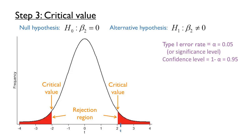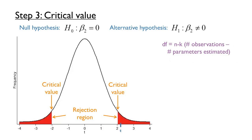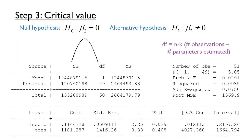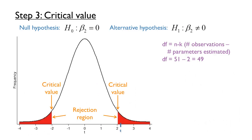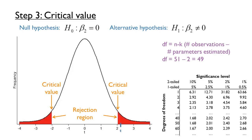Like many other distributions, the shape of a t-distribution depends on the degrees of freedom. In this case, the degrees of freedom in the regression, sometimes abbreviated df, is n minus k — the number of observations minus the number of parameters estimated. Looking back at the regression results, we have 51 data points and two parameters estimated, the constant and the slope, giving us 49 degrees of freedom. After we have selected the type 1 error rate and we know the degrees of freedom, we can find the critical value from a table. For our two-tailed test with a 5% significance level and 49 degrees of freedom, rounding to the closest available value on the table, our critical value is 2.01, sometimes denoted as t_crit.